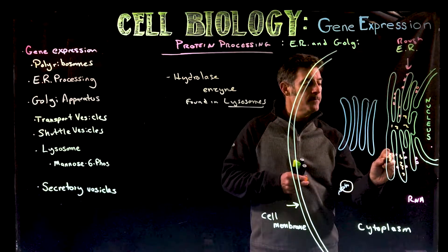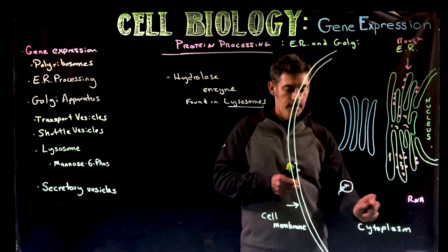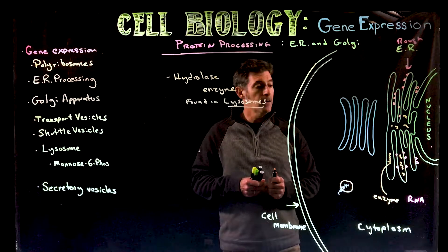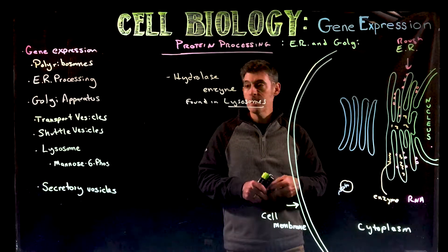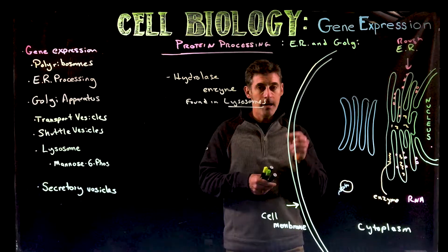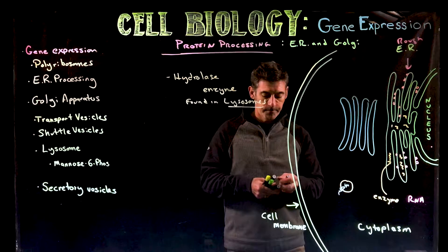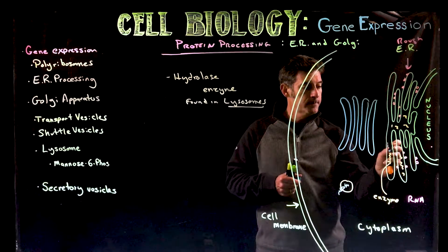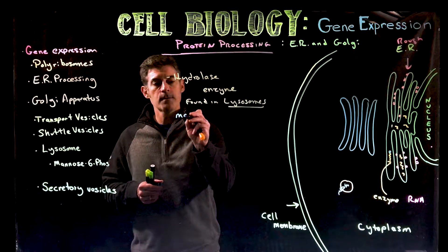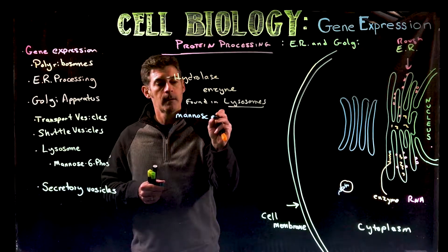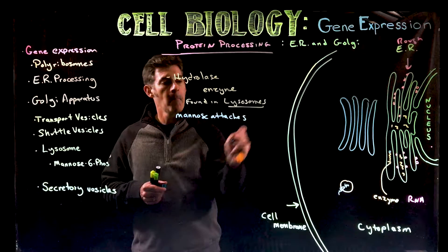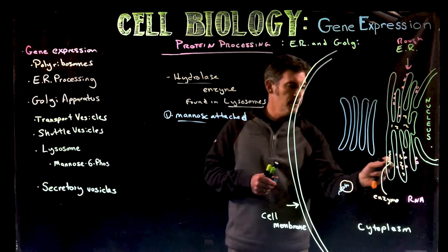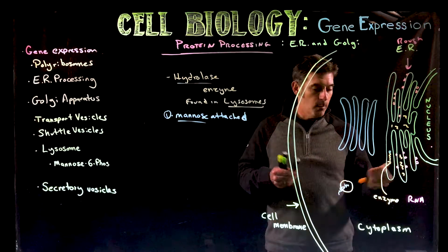Let's say here we have the hydrolase — our enzyme that we're going to be working with — now inside the ER lumen. One of the chemical modifications specifically for hydrolase is that it has to have a chemical tag to be transported to the lysosome. This chemical tag involves two parts. Part one involves a sugar: the hydrolase gets the sugar mannose attached, and that happens here in the ER before it leaves.